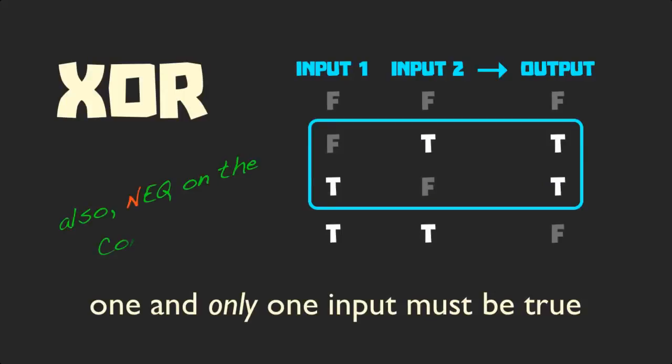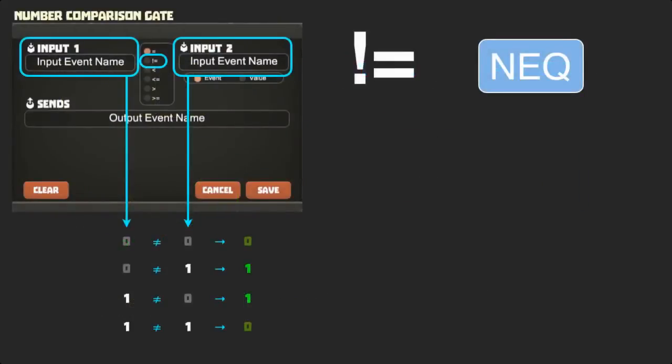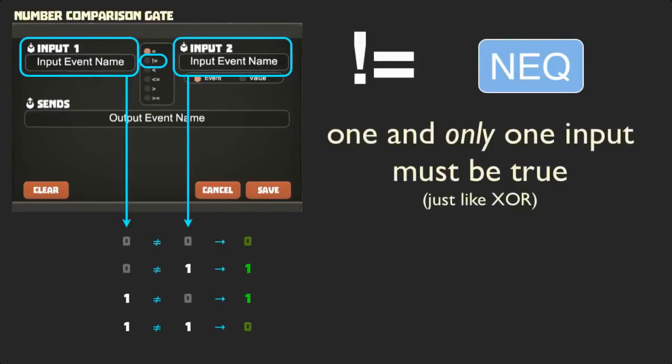As with the equals operation, we can carry our rule over from the gate. For the output to be true, one and only one input must be true.